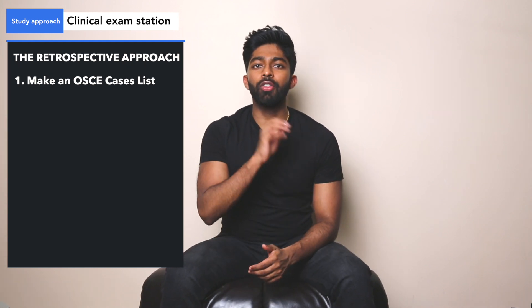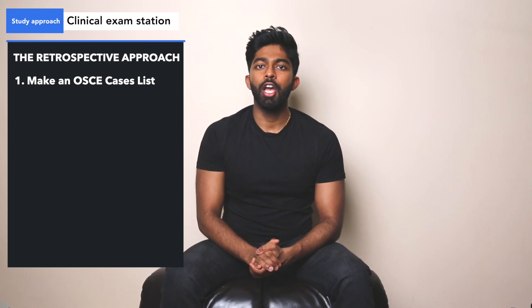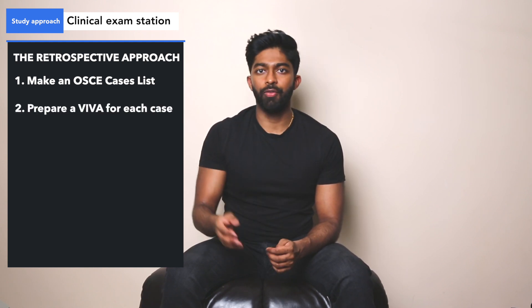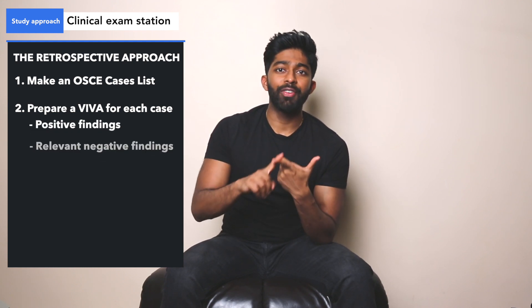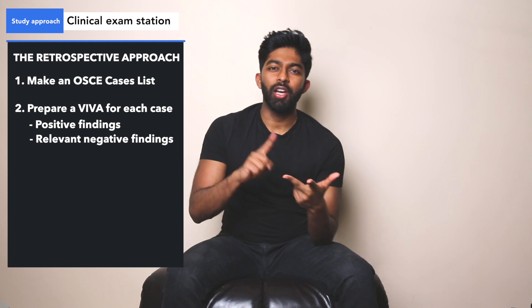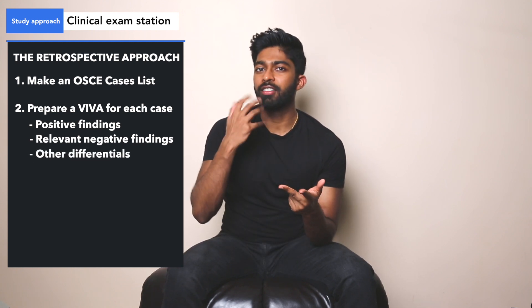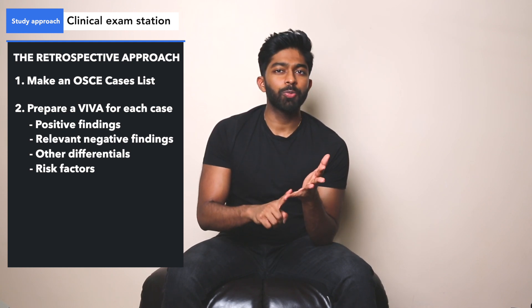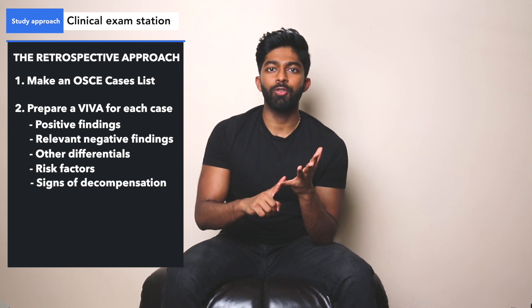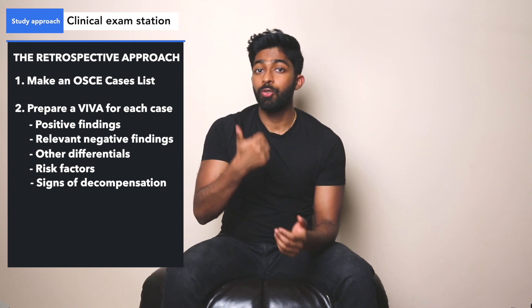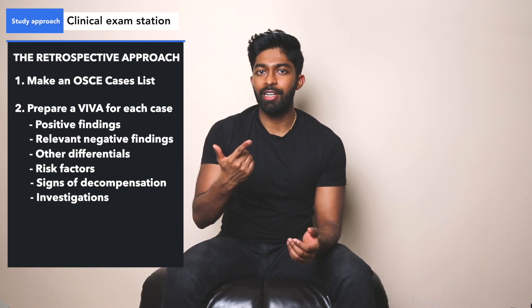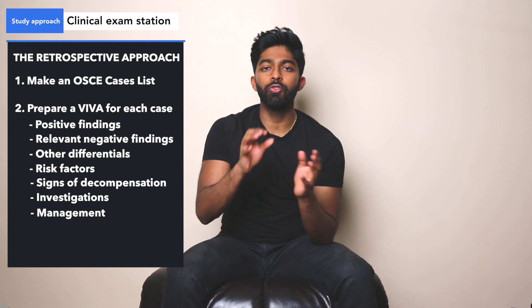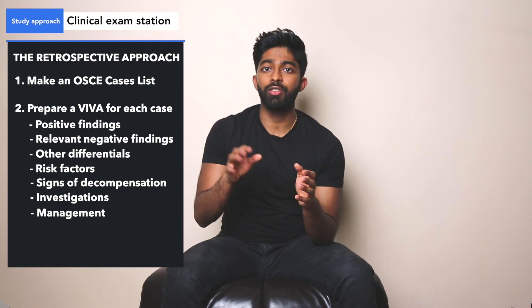Step two: for each of those three or four cases, prepare a really short viva — just a few bullet points on each of the following: what are the positive findings from that case, what are the relevant negative findings, what are the other differentials, what are the possible risk factors, what are the possible complications or signs of decompensation, how would you investigate this patient, and how would you manage this patient. Just one or two bullet points on each of those points for each case.